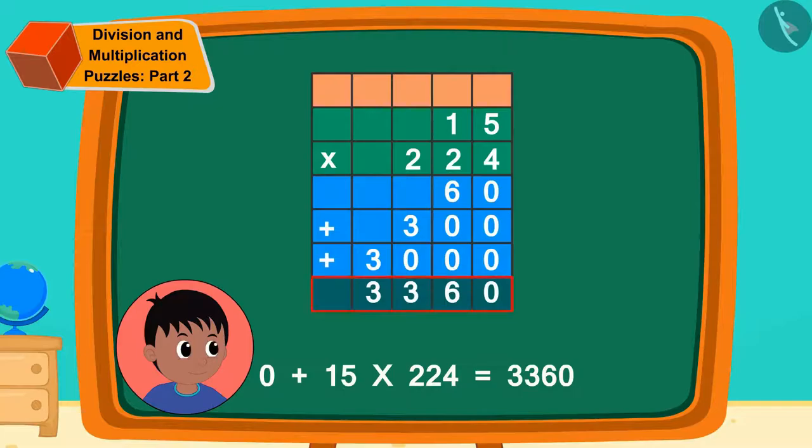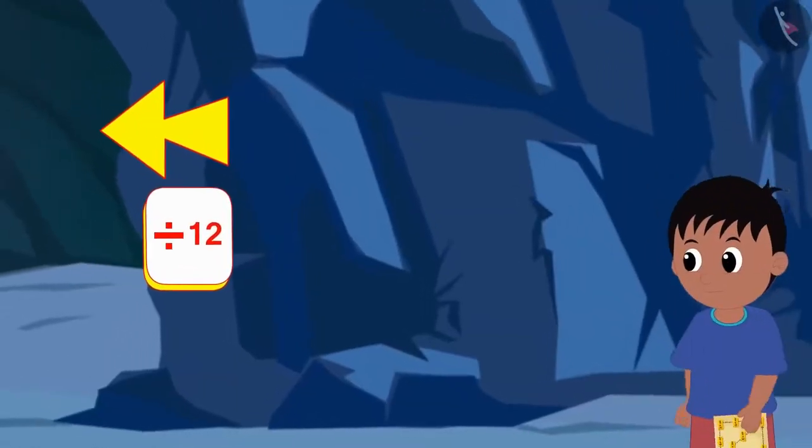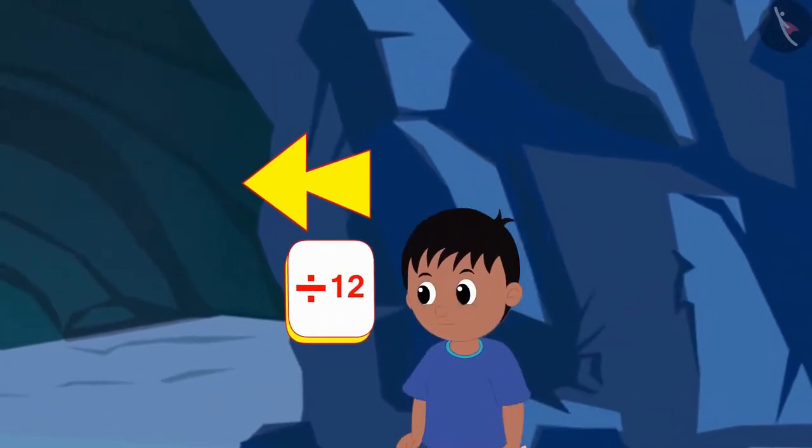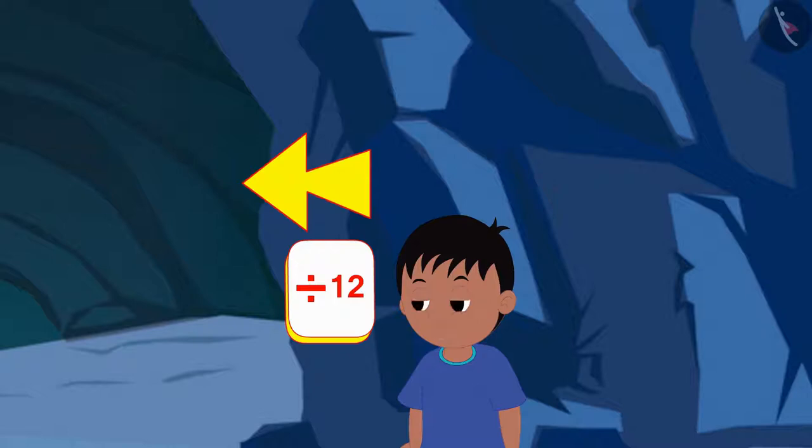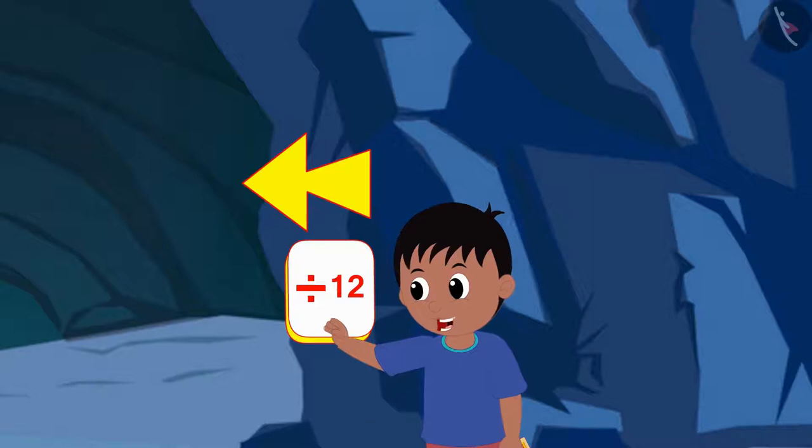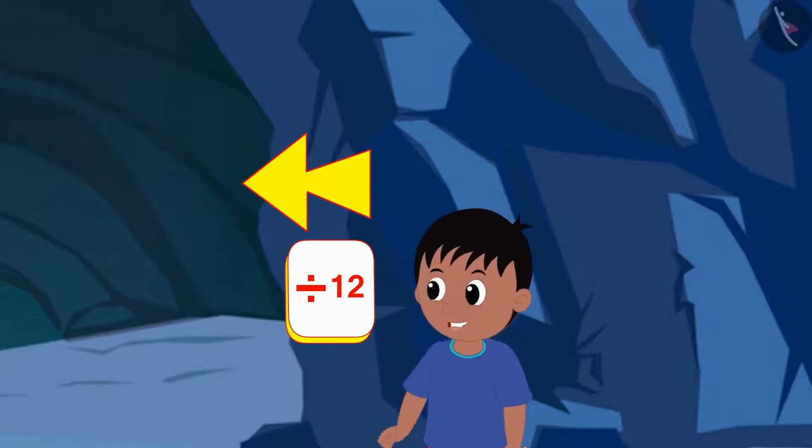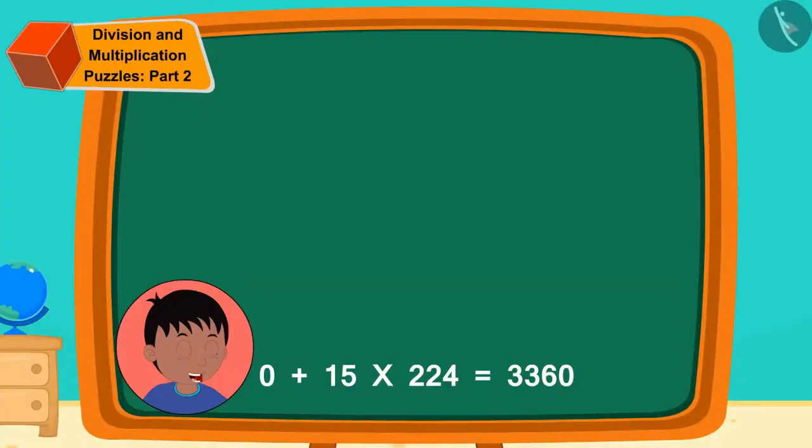Now, after walking some distance, Raju saw this symbol. So far, I have got 3,360 as the answer. And on this symbol, it says divide by 12. That means I have to divide 3,360 by 12, thought Raju.